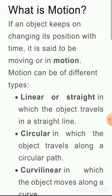If an object keeps on changing its position with time, it is said to be moving or in motion. If an object changes its position at a time, we can say that the object is in motion. That is called motion.